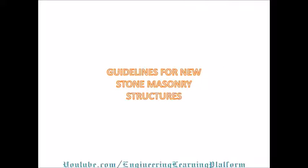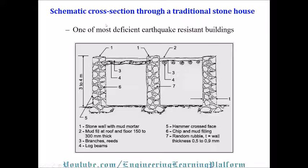Stone masonry structures are still constructed in many parts of the world, especially in rural parts of Asian countries including India and Pakistan, where stone is abundantly available. This is the schematic cross-section of a traditional stone house. One of the most deficient earthquake-resistant buildings is a stone structure, and its typical parts are shown on screen.